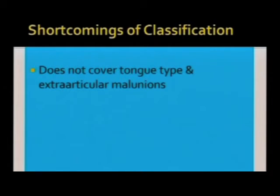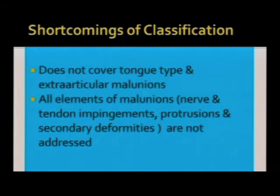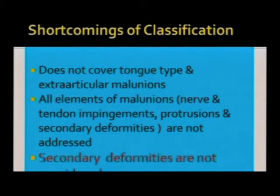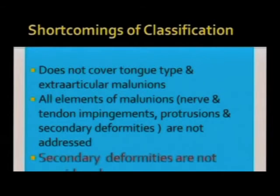But this classification has many shortcomings. It does not cover tongue-type and extra-articular malunions, it does not address nerve and tendon impingement, and protrusions and secondary deformities are not addressed. That is why we need our own analysis of a patient with calcaneal malunion — we need to analyze where the patient is having pain and address every pain generator. My method is to treat every calcaneal malunion like a spine case: identify every pain generator and fire treatment at every pain generator to be successful.